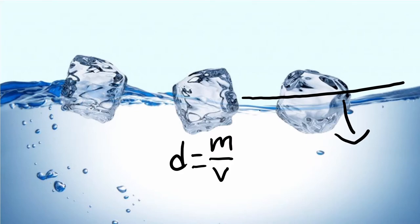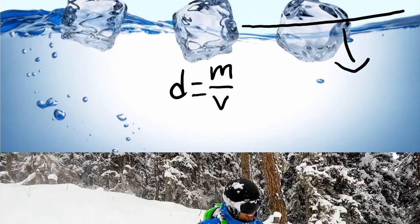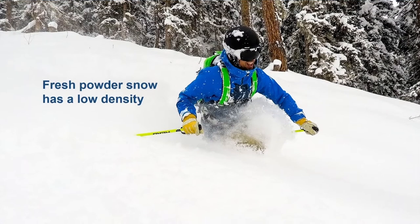This is important because if we know how dense a particular layer of snow is, then we can determine how much water might be available to us downstream when it melts. Snow is basically small crystals of ice, but it can have very different densities.